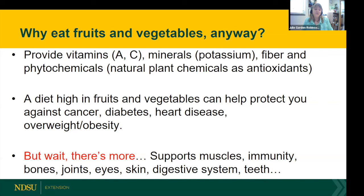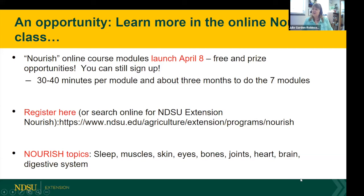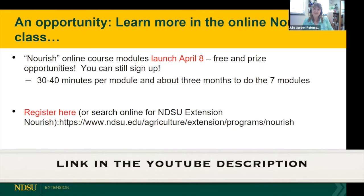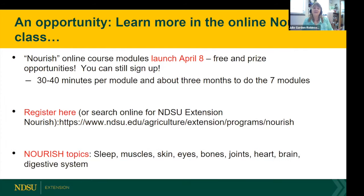The nutrients in fruits and vegetables also keep our skin healthy, our digestive system healthy, and even our teeth healthy. There are a lot of good reasons to eat more fruits and vegetables. We actually have an online course called Nourish — we're launching another session April 8th, it's free, there are prize opportunities, and you can still sign up. It takes about 30 or 40 minutes to do the online modules. You'll have about three months to complete seven modules covering topics like sleep, nutrition, skin, eyes, bones, joints, heart, brain, digestive system, and muscles.